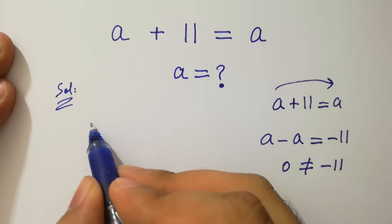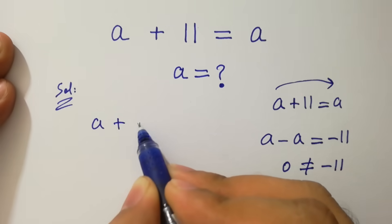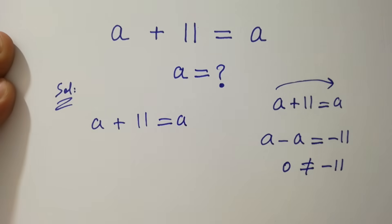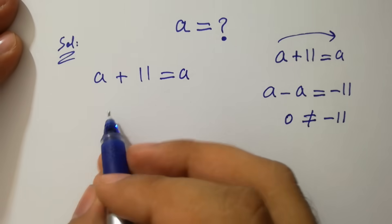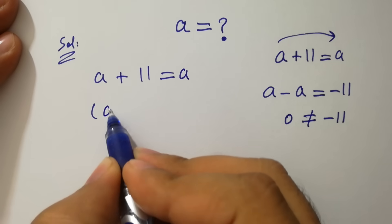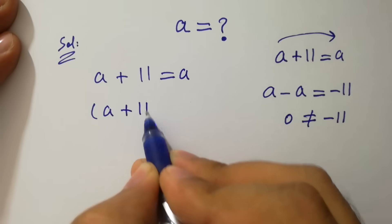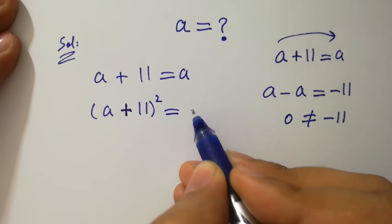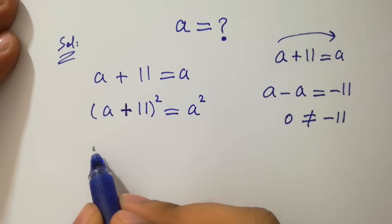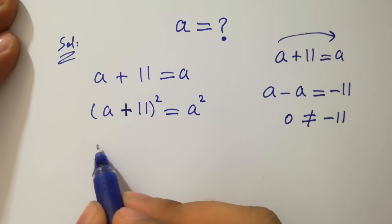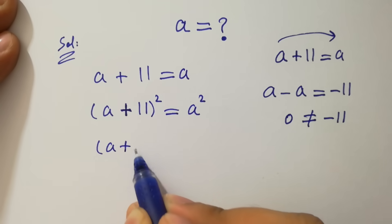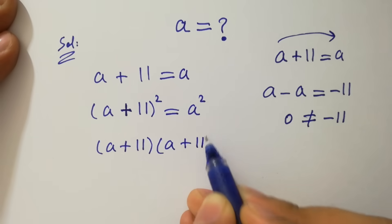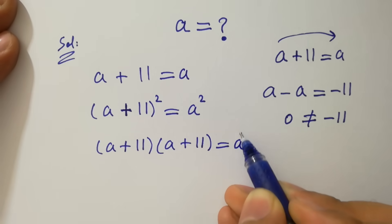We have the question a plus 11 equal to a. To solve this, take square on both sides, which is the same as a plus 11 times a plus 11 equal to a square.